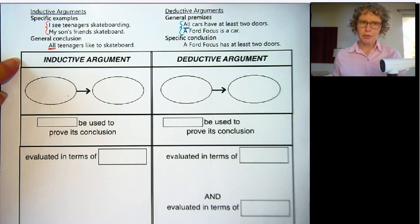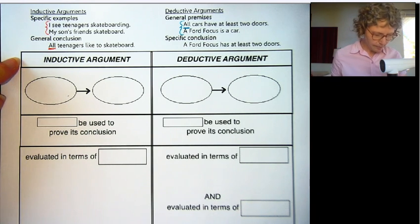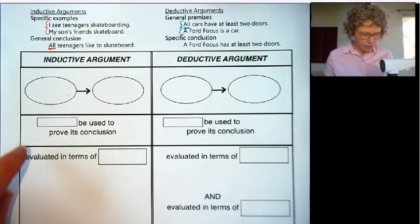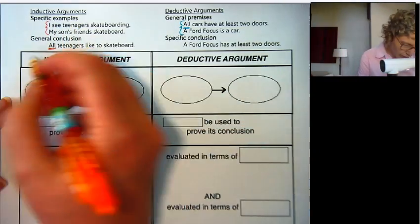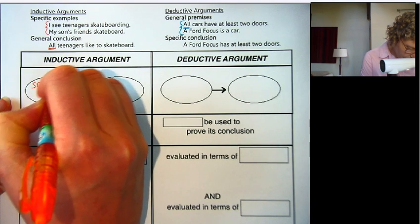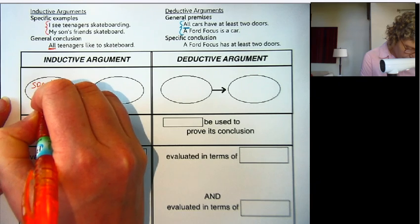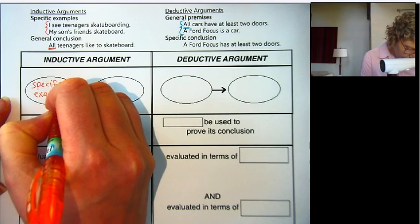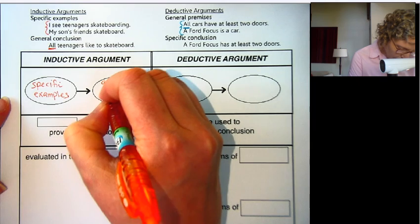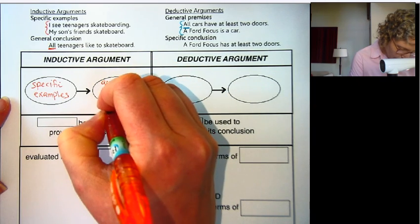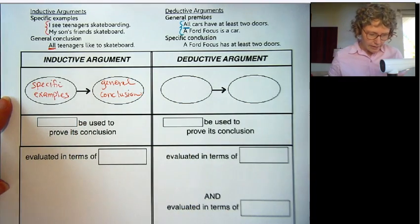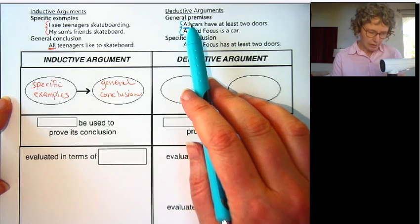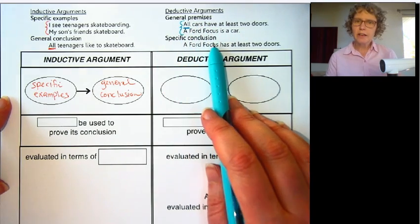So let's talk about the properties of inductive and deductive arguments. We'll talk about whether they're true or false, or valid or invalid. The inductive argument goes from specific examples to a general conclusion. A deductive argument goes in reverse, from general premises to a specific conclusion.